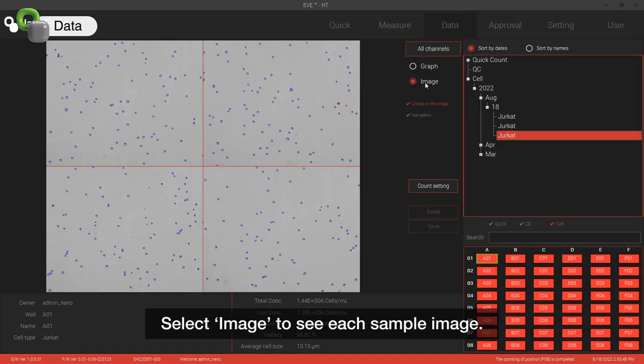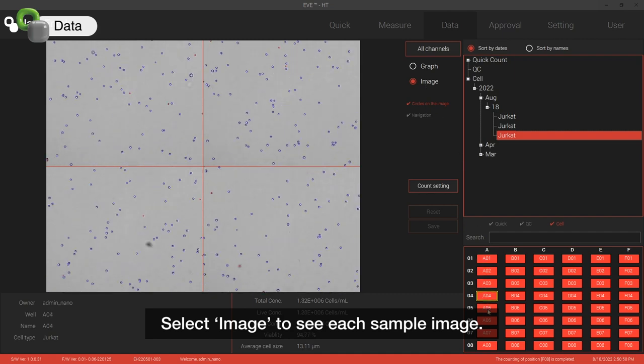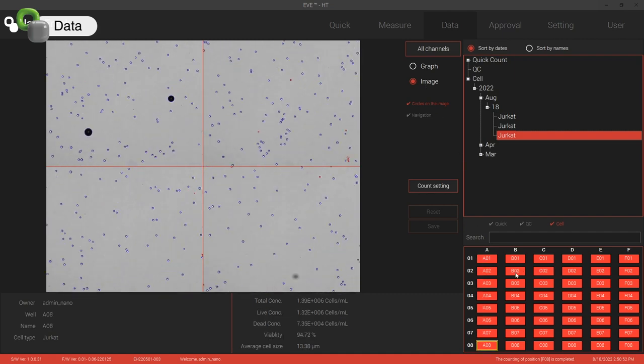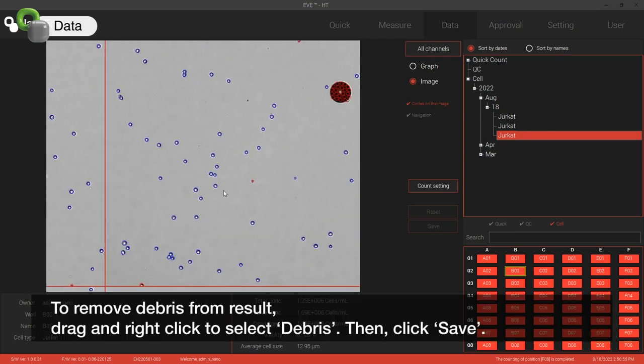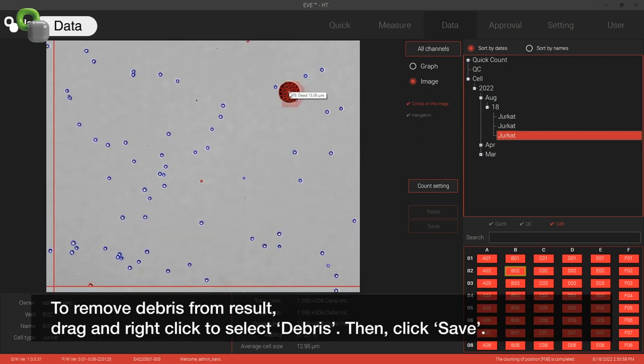Select Image to see each sample image. To remove debris from result, drag and right click to select debris. Then click Save.